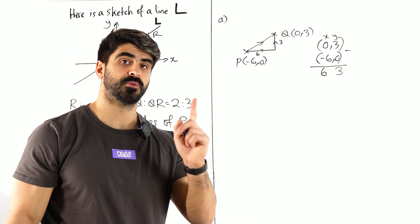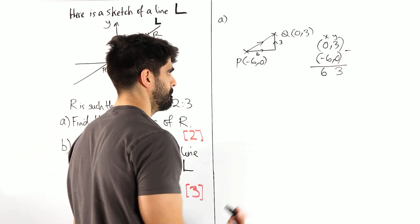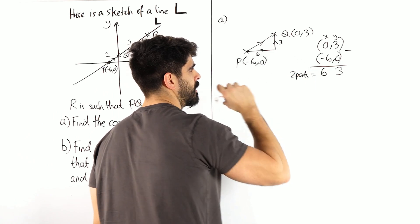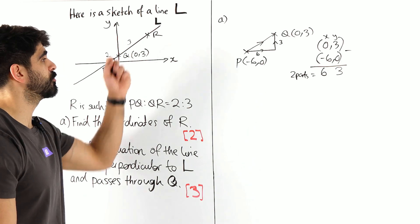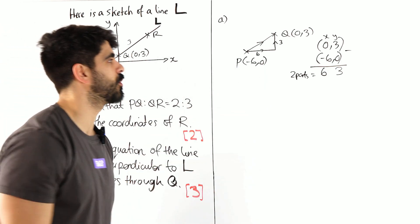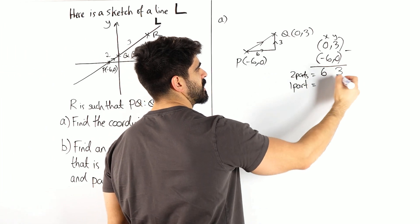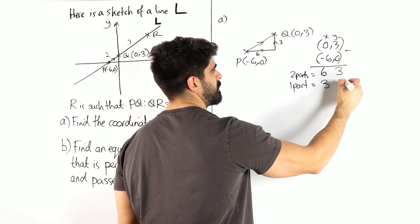Now remember that's worth two parts. Okay, so these are worth two parts. We need to figure out what three parts would be worth. So let's just work out what one part is. One part, we're just going to divide these by 2, so 3 and 1.5.